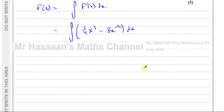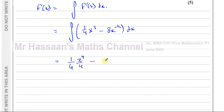To integrate, we add one to the power and divide by the new power. Everything is already ready for integration — in index form with x terms on the numerator. So we get: a quarter times x to the power of 4 divided by 4, minus 8x to the power of one half divided by one half. Don't forget the plus c.